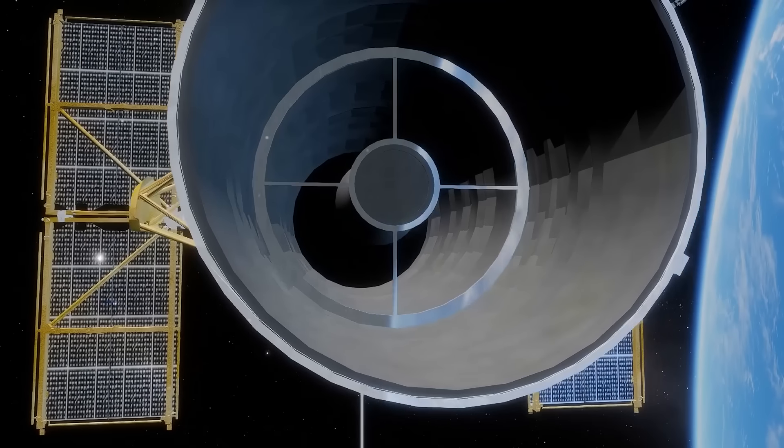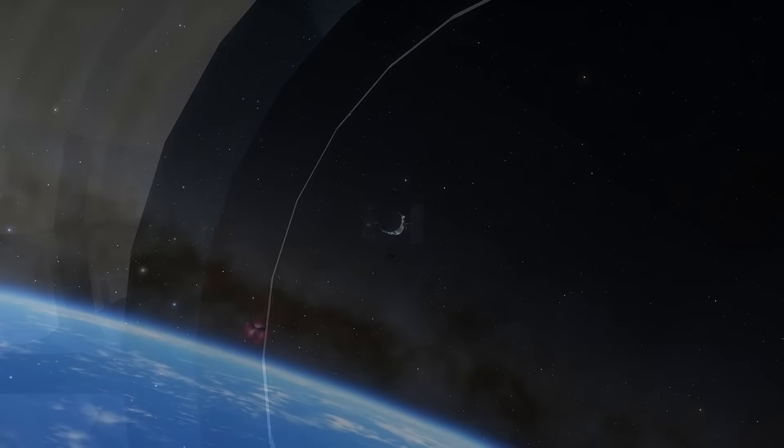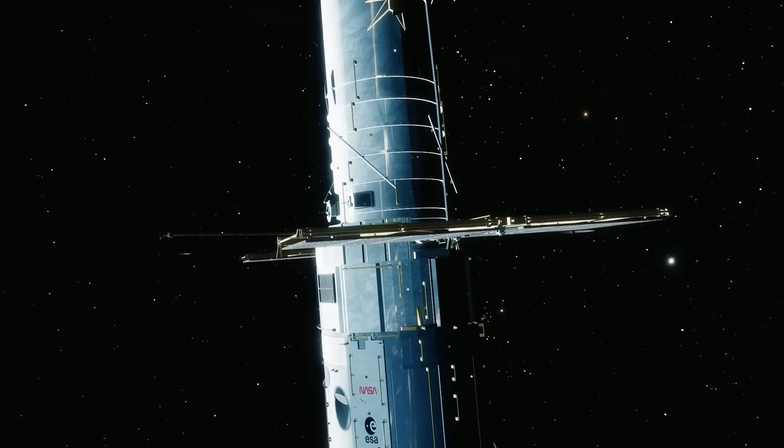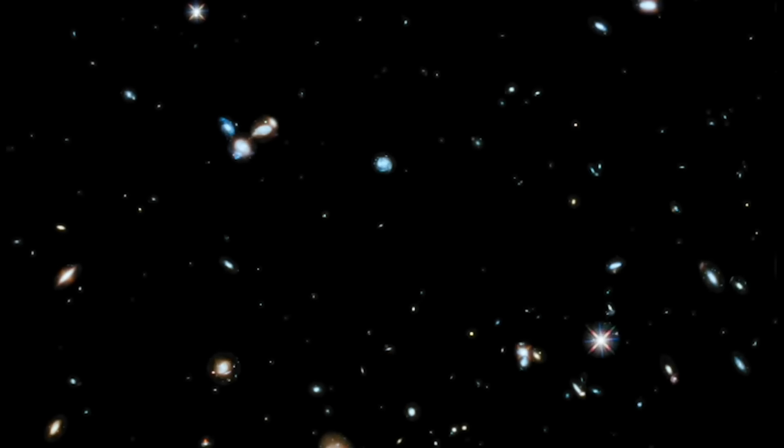Hubble has captured more than 1.1 million stunning images of the cosmos since its launch, ranging from nearby stars and nebulae to galaxies at the farthest reaches of the observable universe. Its advanced camera technology enables us to peer even deeper into space, unveiling a universe that is much younger and constantly undergoing change and evolution.